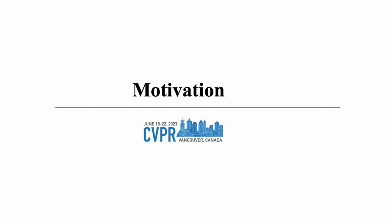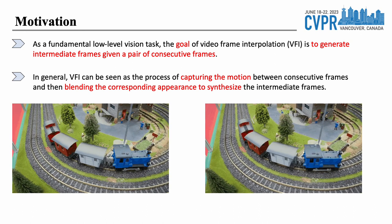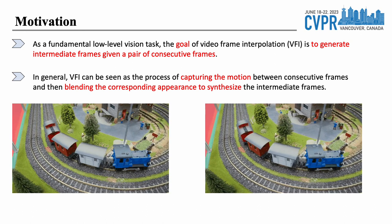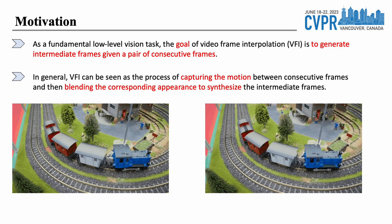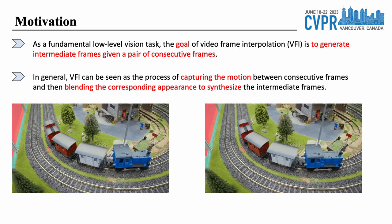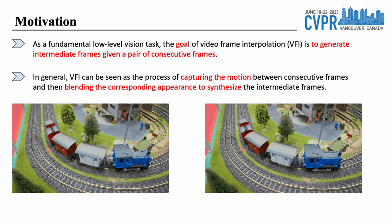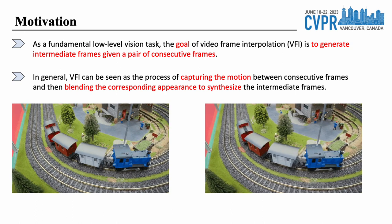To begin, I will address the motivation behind our research. As a crucial low-level vision task, the objective of video frame interpolation (VFI) is to produce intermediate frames based on a pair of consecutive frames. Essentially, VFI involves capturing the motion between these frames and blending their corresponding appearances together in order to synthesize the intermediate frames. Ultimately, the motion and appearance information that exists between the input frames plays a critical role in achieving exceptional performance in the VFI task.